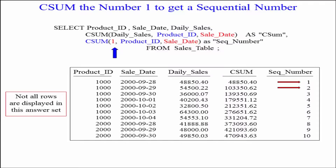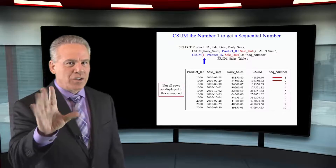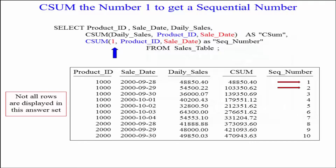I'm going to get the CSUM and I want to get a sequential number. Both techniques for my order analytics are going to use the CSUM, but I want you to notice one thing that those two ordered analytics have in common — the same sort key.